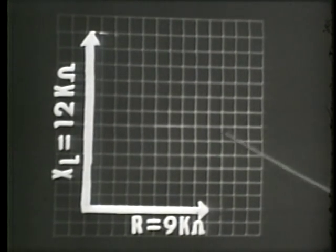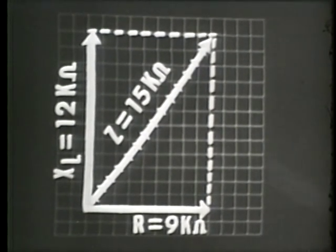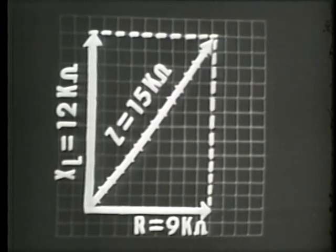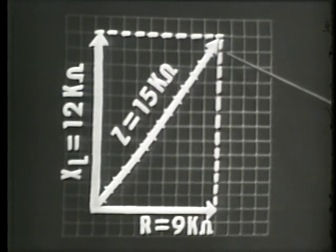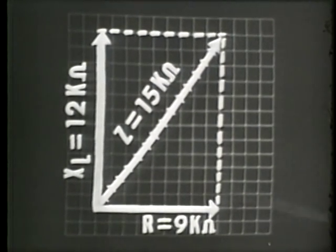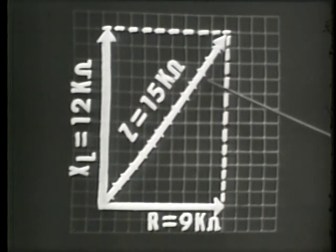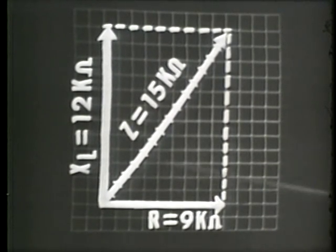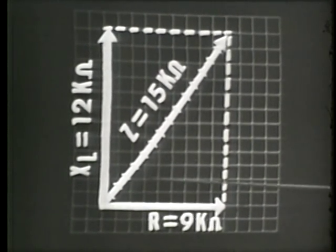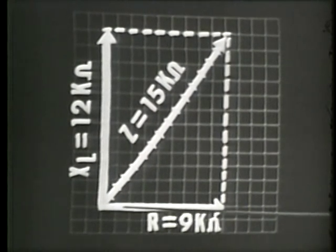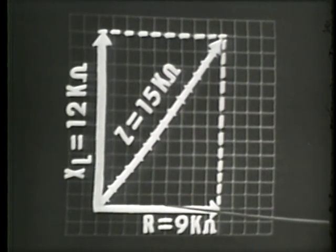The inductive reactance is plotted at 90 degrees due to the voltage-current relationship through any inductor. To find the total opposition, we construct the parallelogram and connect these two corners. Then with the same unit of measure used for constructing our R and X of L vectors, we measure the physical length of the resultant vector. This vector represents the vector sum of R and X of L and is the total opposition in our circuit — in our example, 15 units or 15 K ohms of impedance.